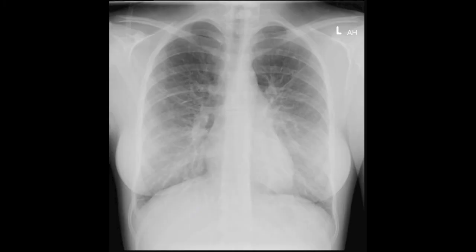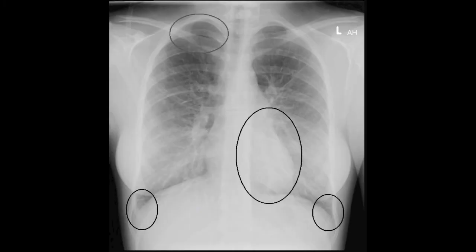Take a second look at the apices, behind the heart, and the costophrenic angles. Occasionally pathology can hide here. You should always continue your review to the end of this structure, even if you find a noteworthy abnormality. Remember, there may be more.